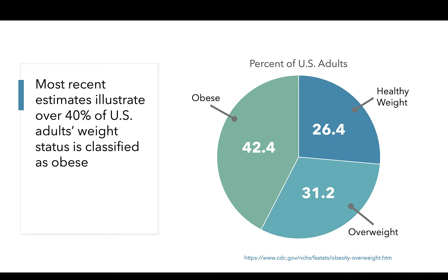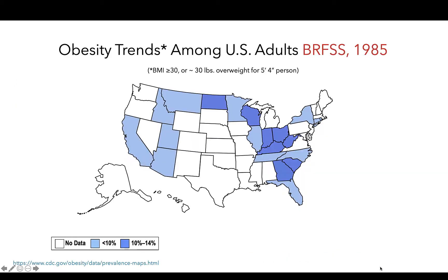This prevalence of obesity is much higher than we've seen in the past few decades. Here we see data from the Behavioral Risk Factor Surveillance System, which collects data on a number of health metrics for Americans. These maps are available on the CDC's website and can be found in the link referenced on the lower left-hand corner. These are data on obesity, classified as BMI at or above 30 kilograms per meter square.